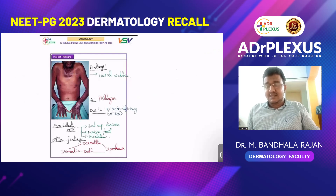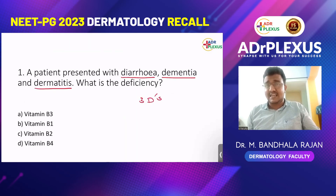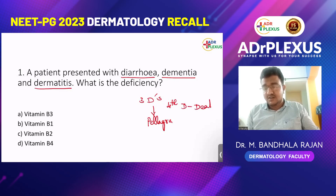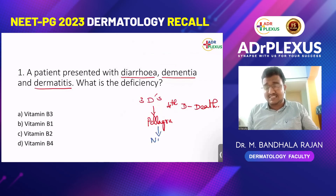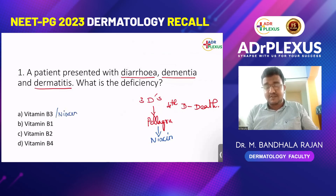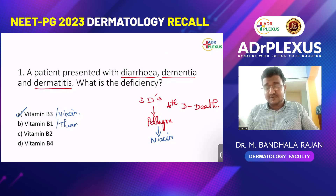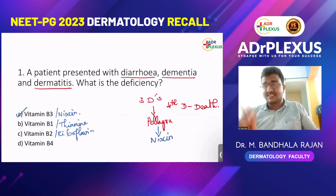We have already discussed this previously. If the three Ds are dermatitis, diarrhea, and dementia, it points towards pellagra. There is also a fourth D, which is death. Pellagra is due to niacin deficiency. But the option given is not niacin — instead B3, B1, B2, B4 are listed. Niacin is also known as vitamin B3; B1 is thiamine and B2 is riboflavin. So the answer is vitamin B3. It is a straightforward question.